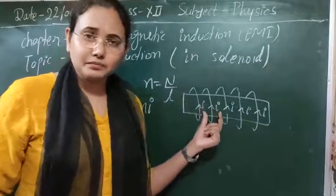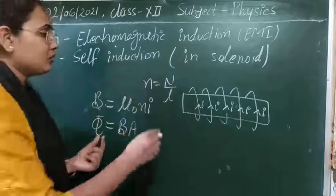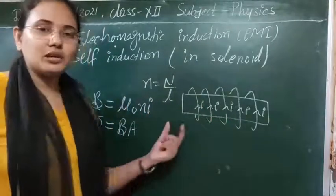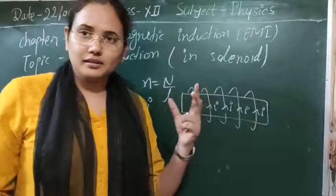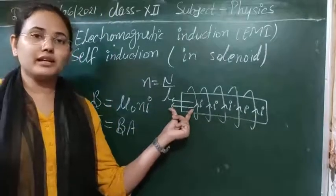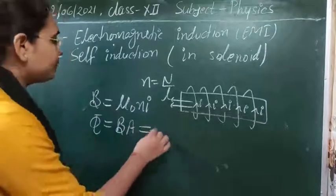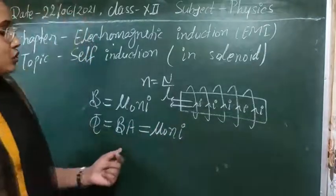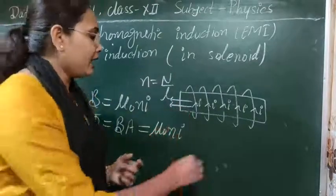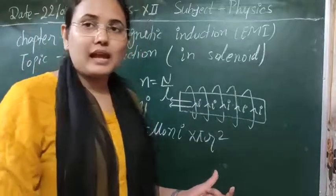The area vector is in the same direction as the magnetic field, so θ = 0° and cosθ = 1. Therefore the flux per loop is φ = BA = μ₀nI · A. If r is the radius of one loop, then the area of one loop is πr², so φ = μ₀nI · πr².